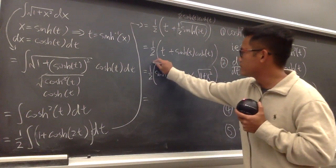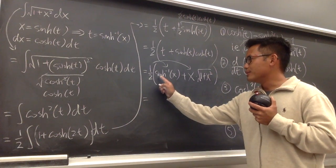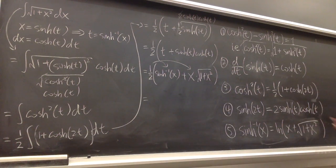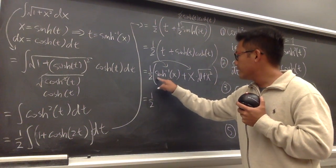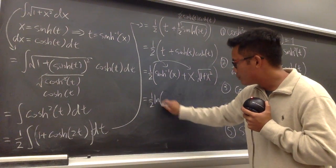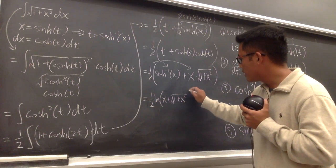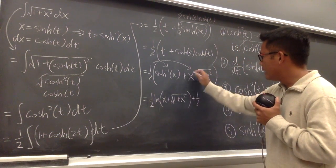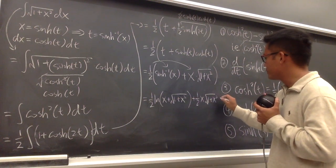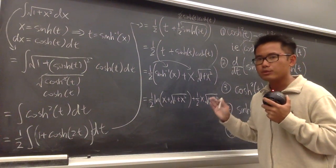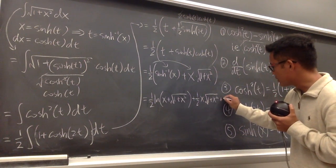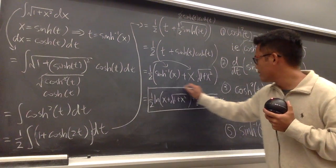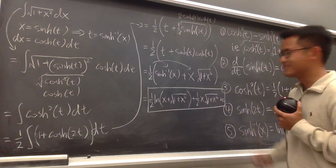Here's the punchline: the inverse sinh of x equals ln(x plus the square root of 1 plus x²). Distributing the 1/2, the final answer is (1/2)·ln(x + √(1 + x²)) plus (1/2)·x·√(1 + x²) plus C. This is the same result as obtained by traditional trig substitution.